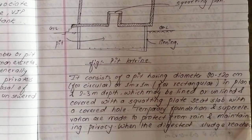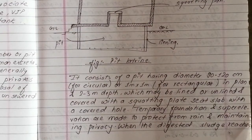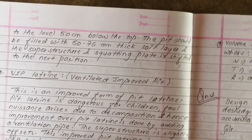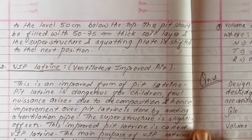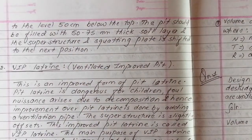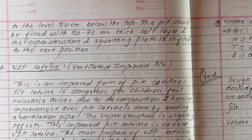Temporary foundation and superstructure are made to protect from rain and maintain privacy. When the digestive solids reach a level 50 cm below the top, the pit will be filled with 50 to 70 mm thick soil layer and the superstructure with squatting slab is shifted to the next position. The question is illustrated in the picture.